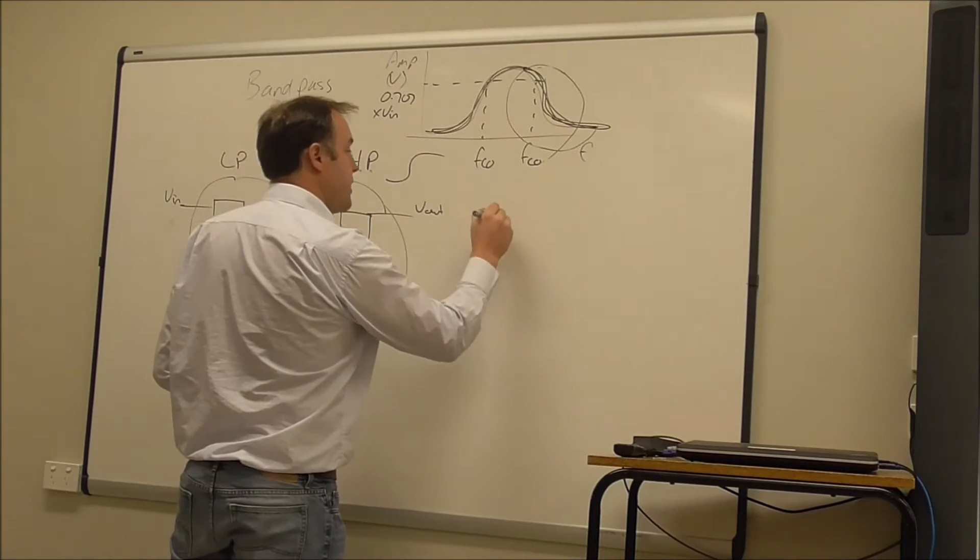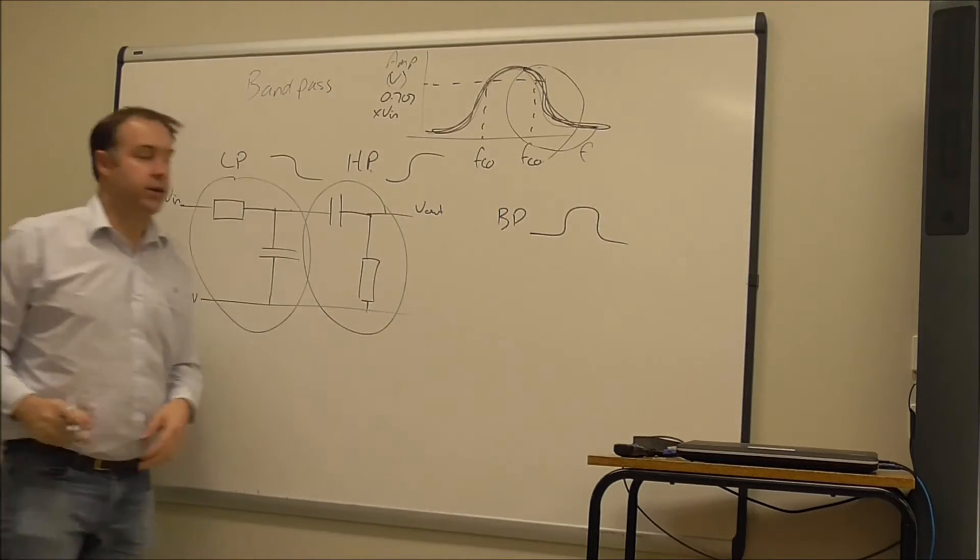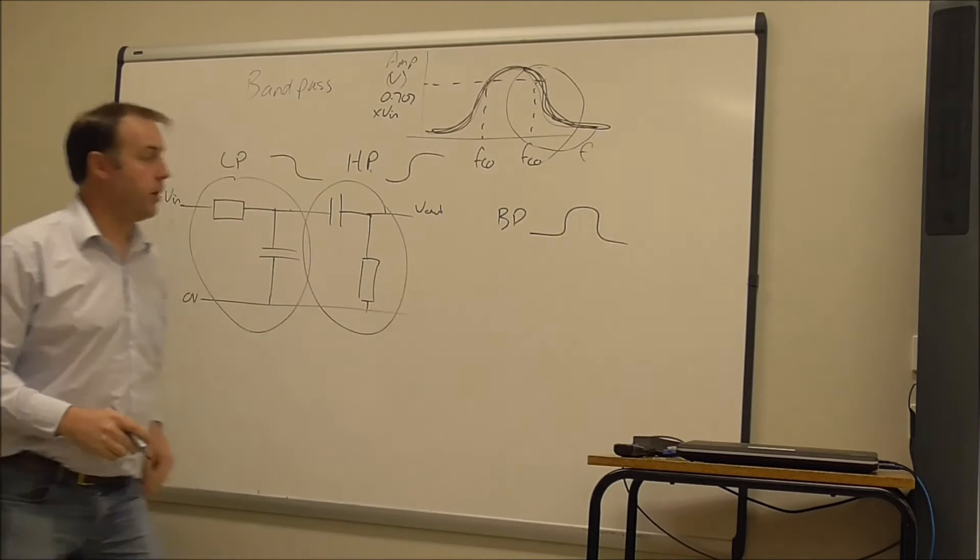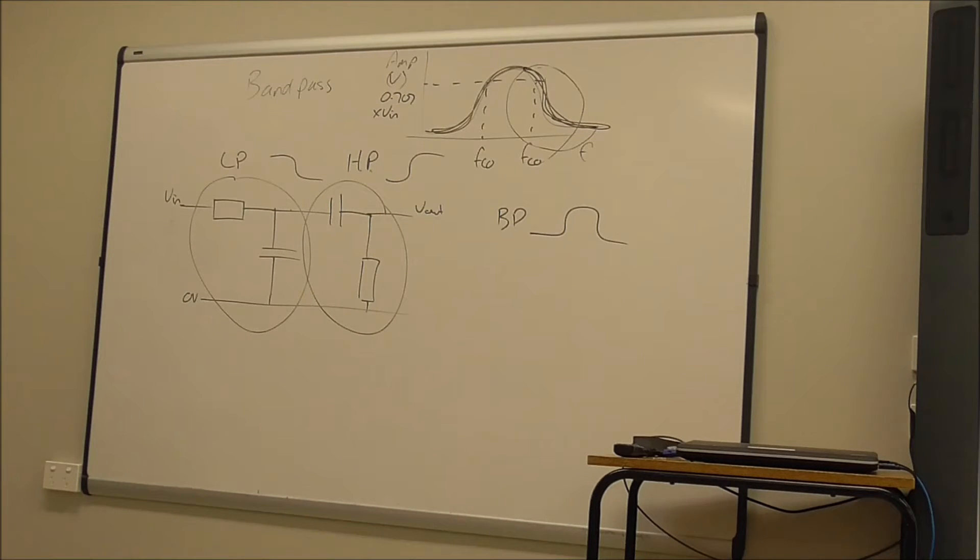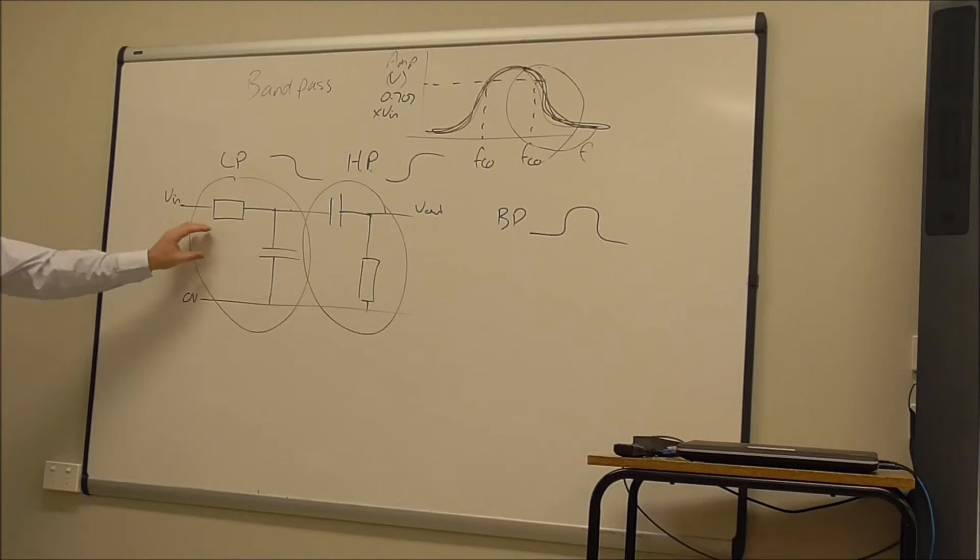And so the output is a band pass, which gives us a combined band, a combined response of something like that. So two filters in series effectively can provide a high pass filter.